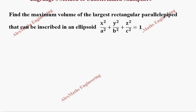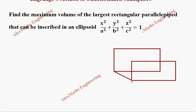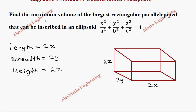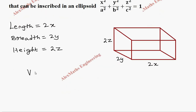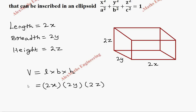This rectangular parallelepiped is nothing but a cuboid. So we have a cuboid, and we are going to take length, breadth and height. Since it is inscribed inside an ellipsoid, we are going to take the length as 2x, breadth as 2y, and height as 2z. The volume formula is length into breadth into height, so this is 2x × 2y × 2z, which gives volume = 8xyz.